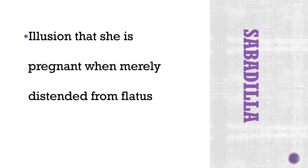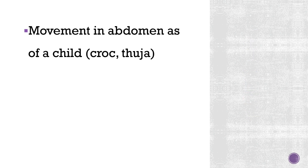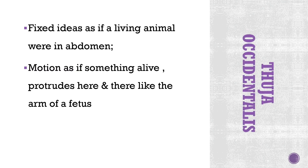In Sabadilla, she is distended from flatus but she thinks that she is pregnant. Next: movement in abdomen as of a child. This is given in Sulfur — movement in abdomen as of a child. Next drug: fixed ideas, as if a living animal were in the abdomen; motion as of something alive, protrudes here and there like the arm of a fetus. In Sulfur they simply have movement as of a child.